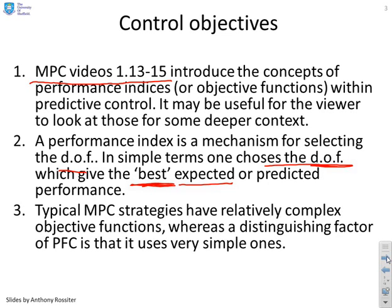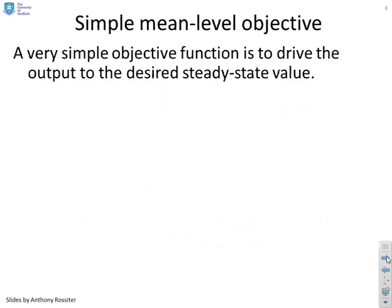Typical MPC strategies have relatively complex objective functions, usually quadratic functions. A distinguishing characteristic in PFC is that it uses very simple performance indices. Here we're going to give the simplest performance indices of all, and we're going to call it a mean level objective. A simple objective is simply to drive the output to the desired steady-state value.